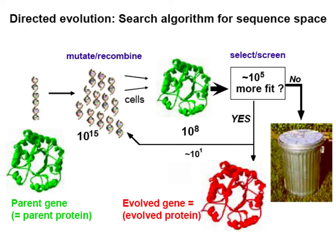In directed evolution, you start with your parent protein, isolate its gene, and introduce mutations — one step borrowed from natural evolution — as well as recombination. This DNA library is then transformed back into cells so that the protein is generated, and then you introduce a selection or screening to see if this product is more fit. If it is, you use it as a starting point to introduce another set of mutations, and go through this iterative cycle to get a highly evolved protein.